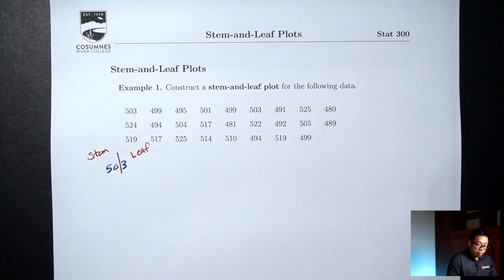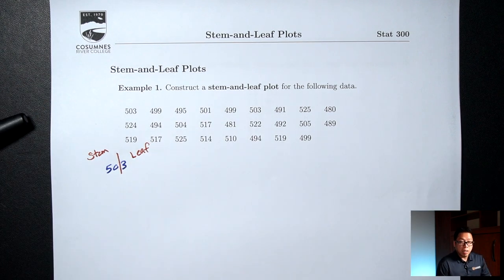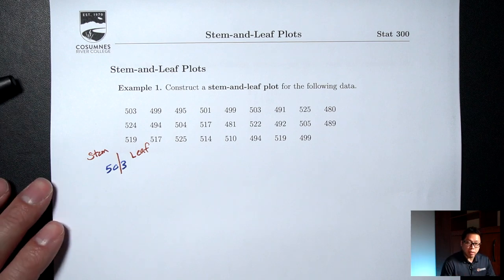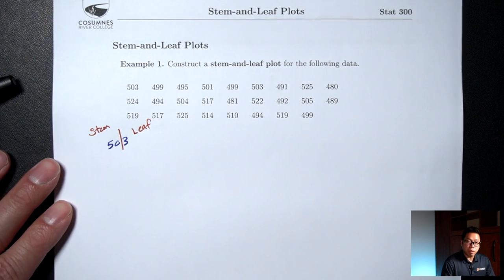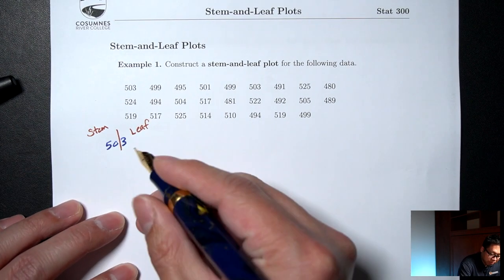So in my data here, the very last digit is going to be a leaf, and everything before that last digit is a stem. The way we're going to make our Stem and Leaf Plot is we're going to first list out all the possible stems in my data.